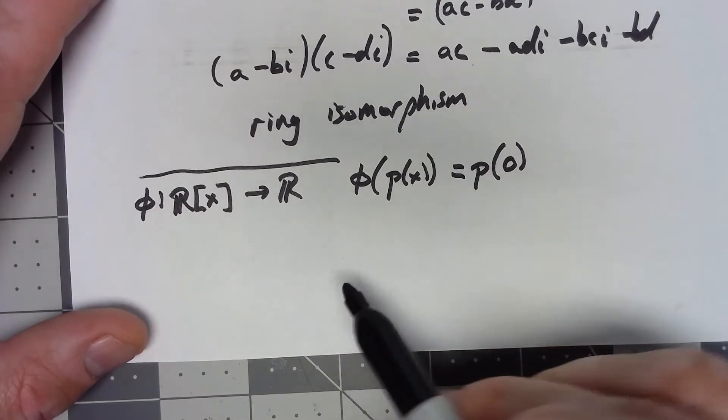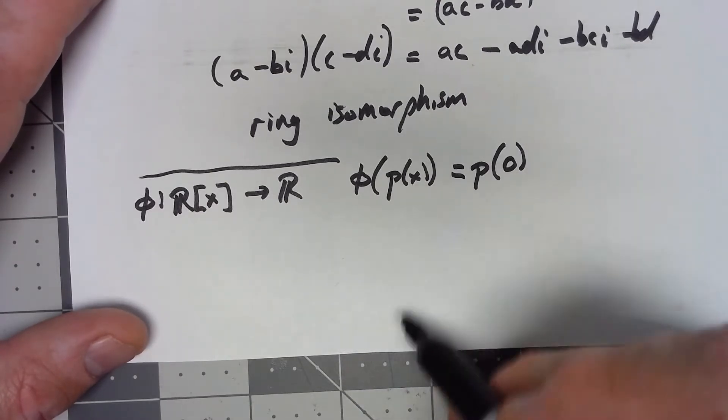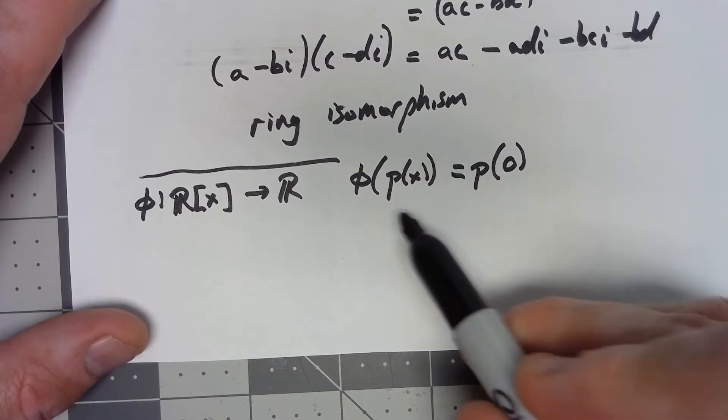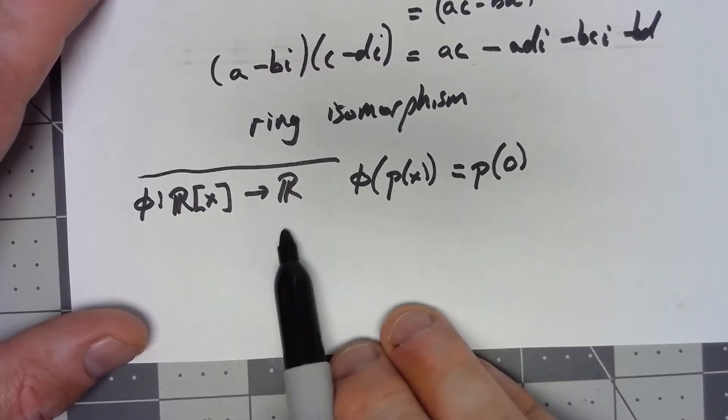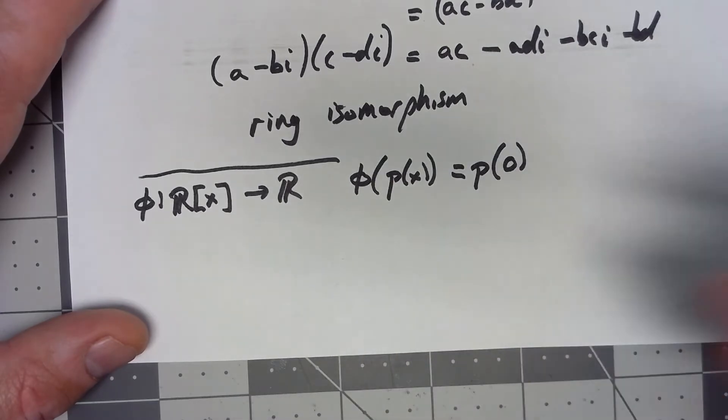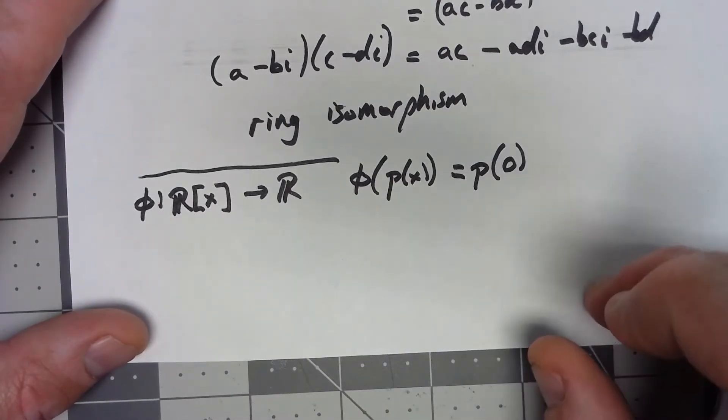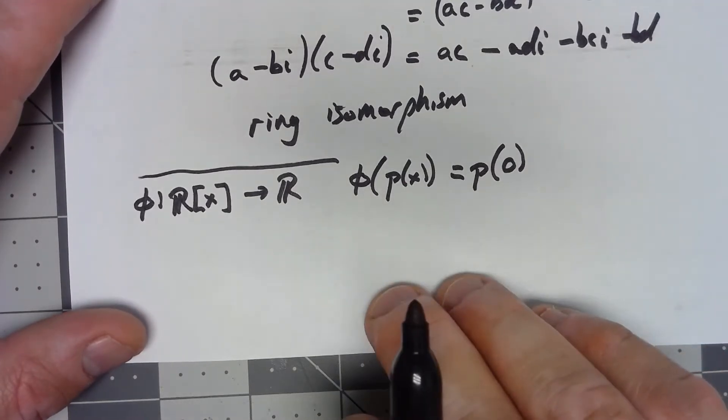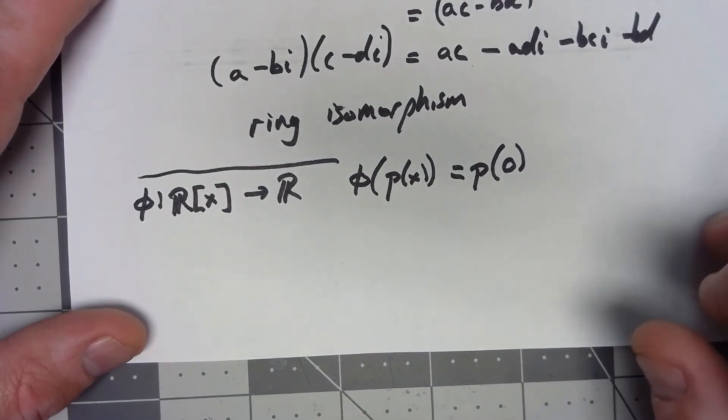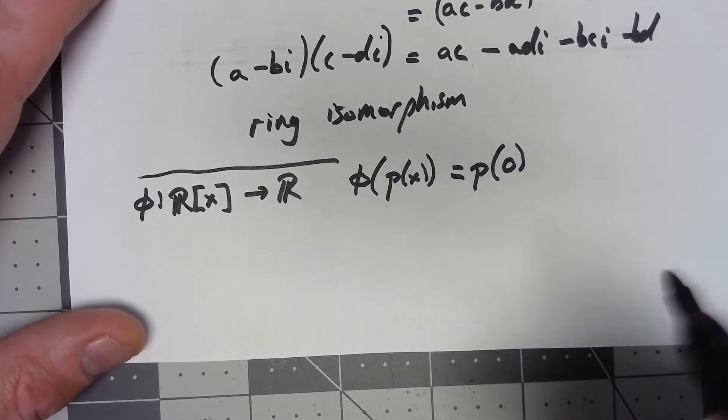Well, again, I'm not going to go through all the details here, but it's pretty easy to see if you add two polynomials, the constant is the sum of the two constants from the two different polynomials. If I multiply two polynomials, the constant term is just the product of the two constants from the different polynomials. So this will preserve both addition and multiplication.